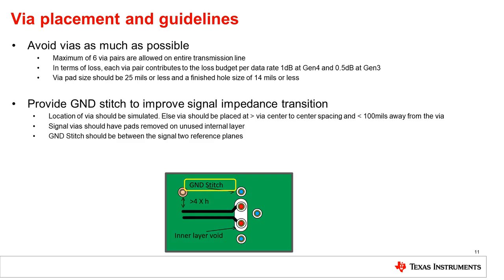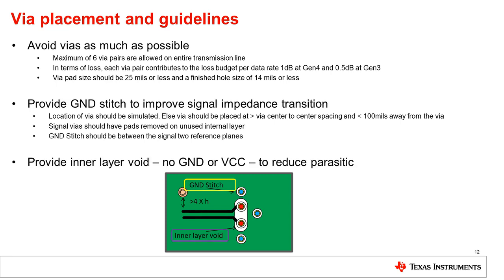Ground stitching close to the via causes a lower impedance to ground, improving signal transition. It is recommended to provide interlayer voids around the vias, meaning there should not be a ground or power layer around the via. Distance from the via to these layers is normally determined using 3D simulations.